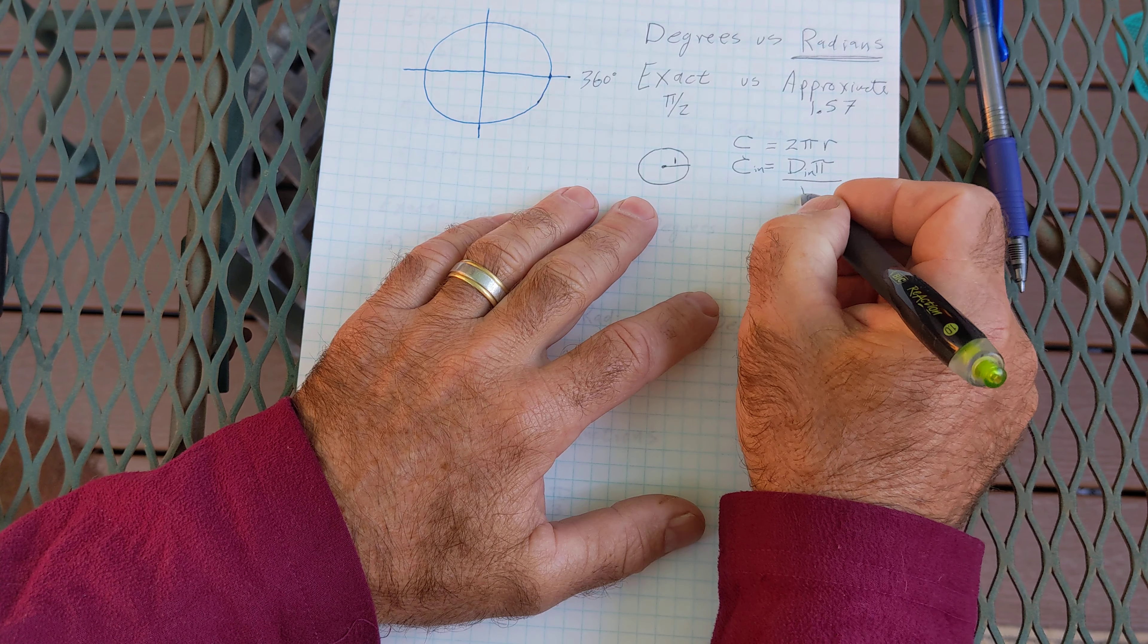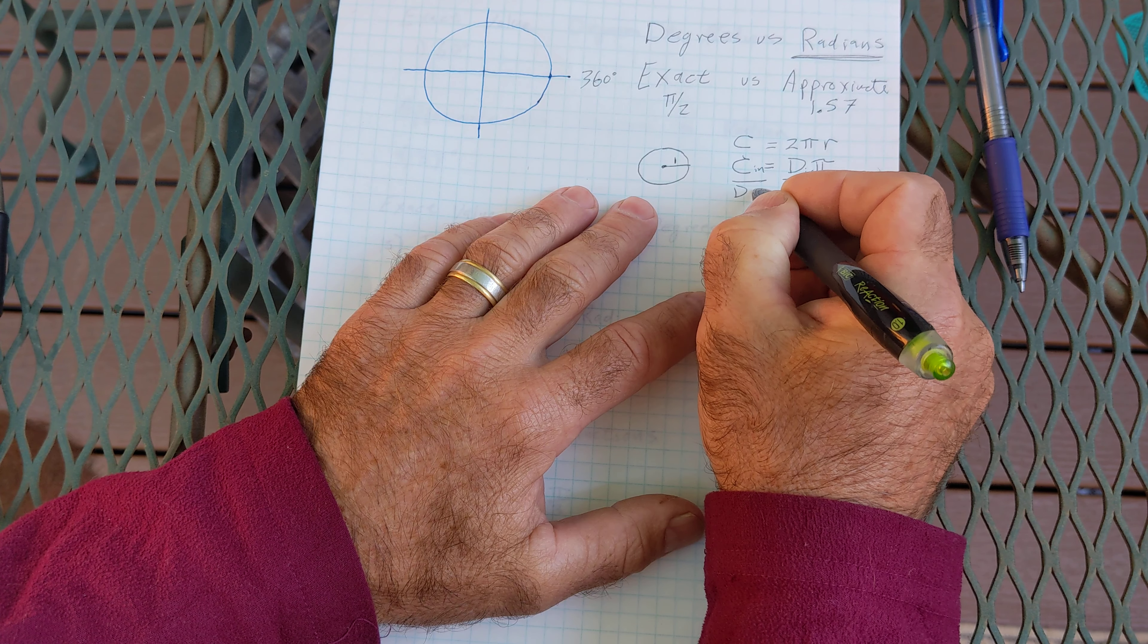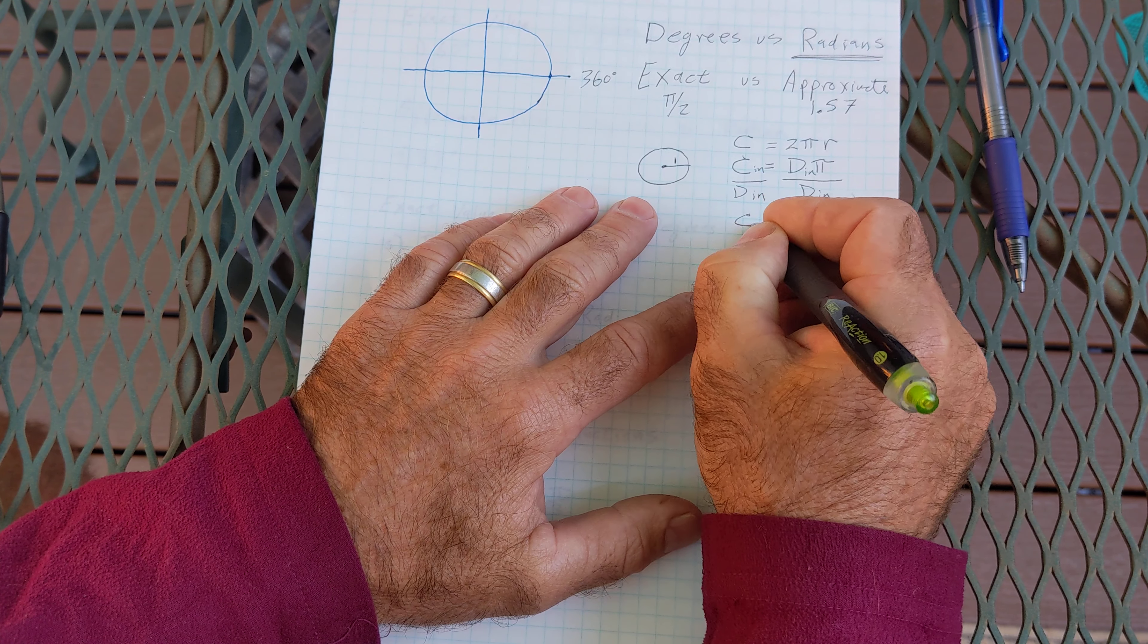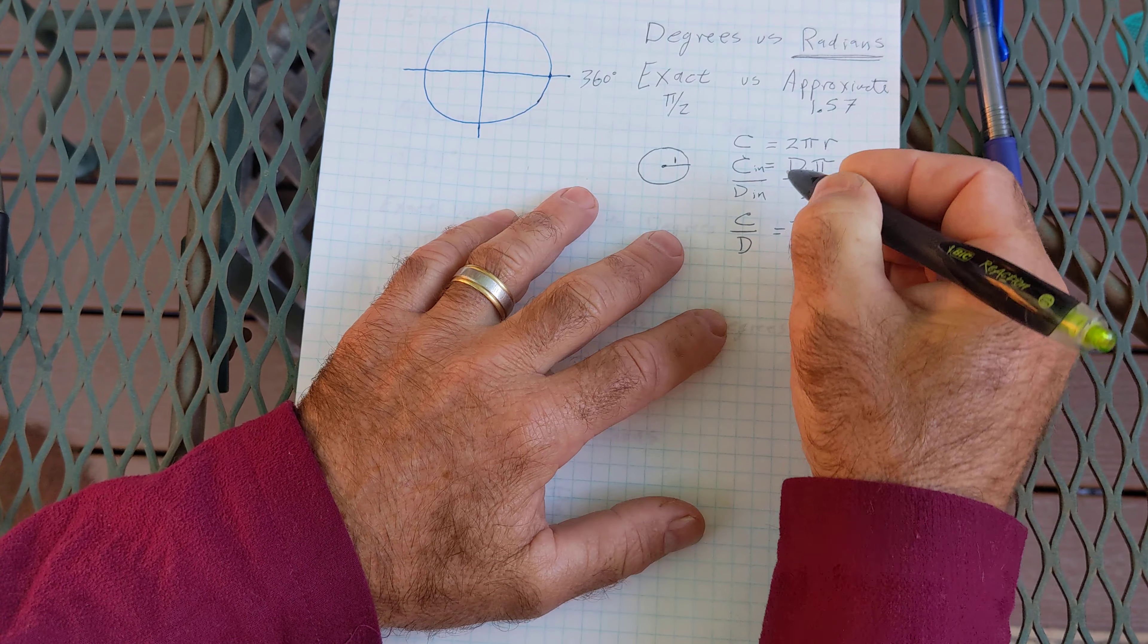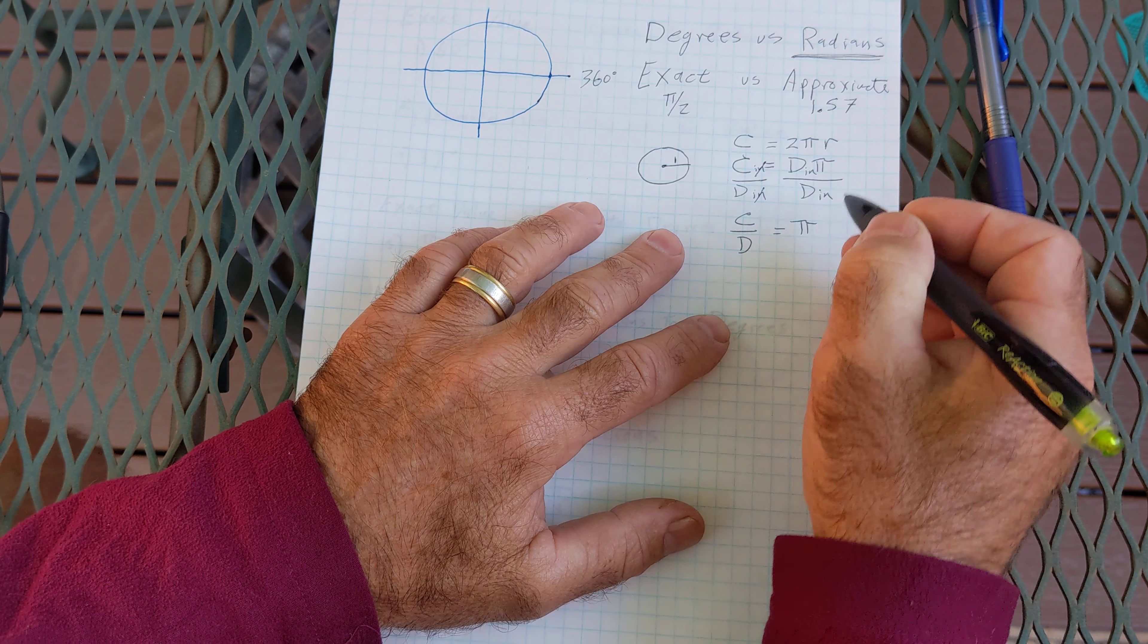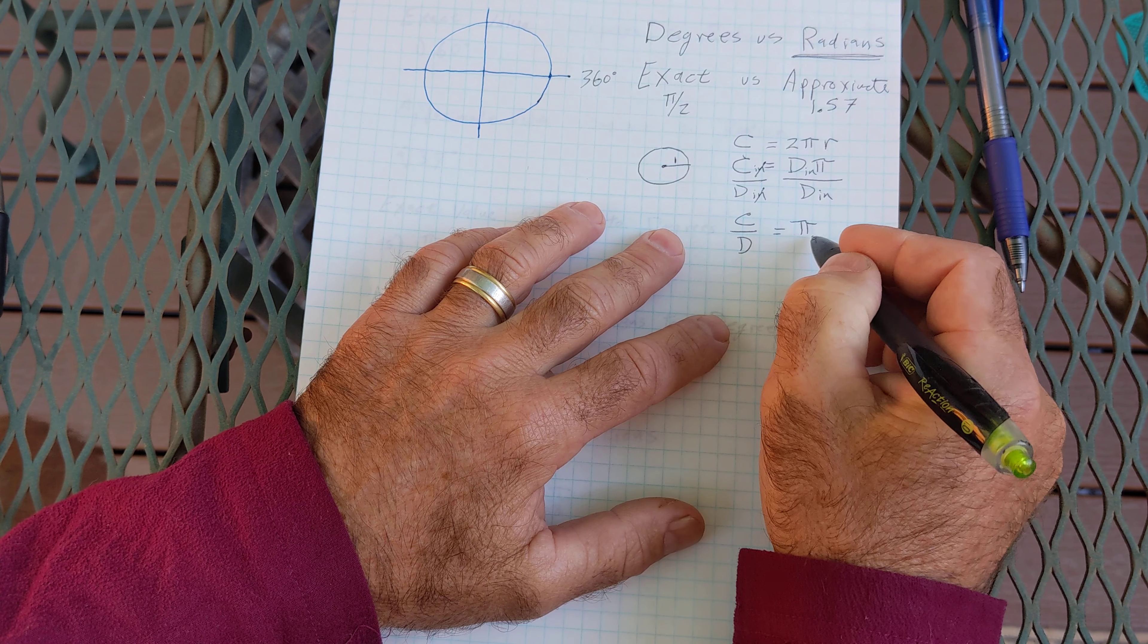If you were to measure circumference in inches the diameter across the circle would also be in inches and if I were to solve for pi I divide both sides by diameter in inches and I could see that pi is actually a ratio of circumference to diameter and then my units inches cancel.